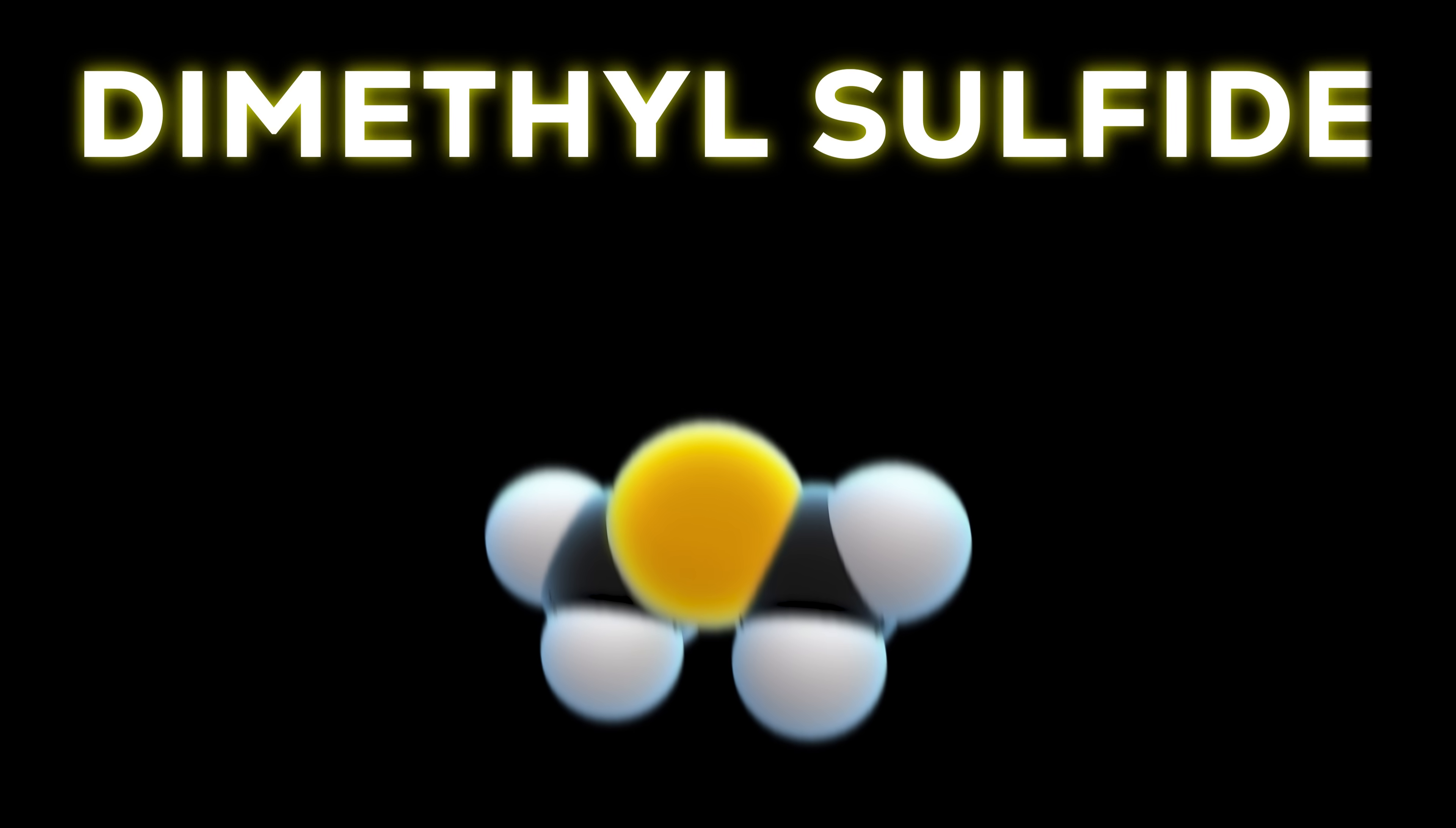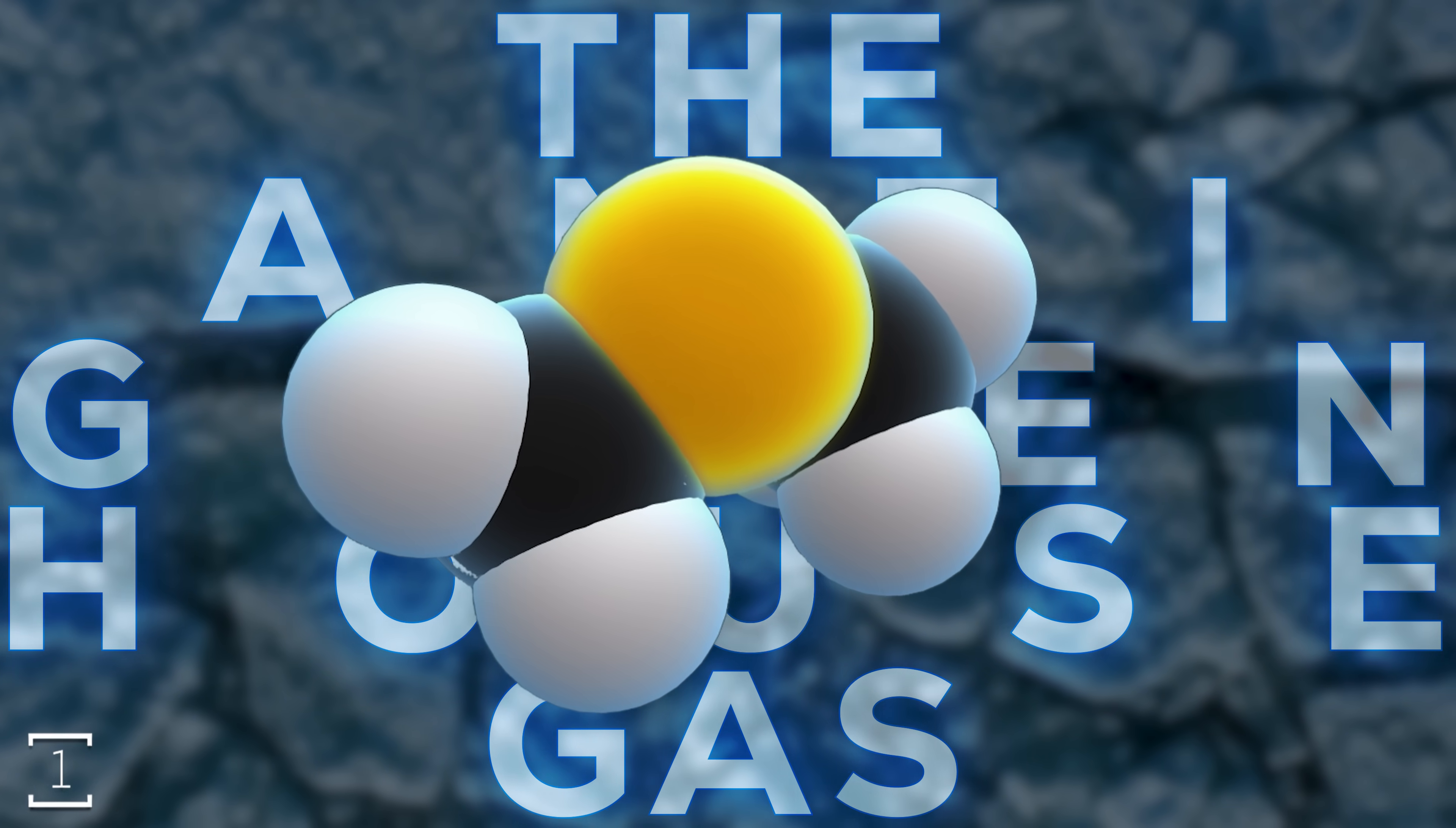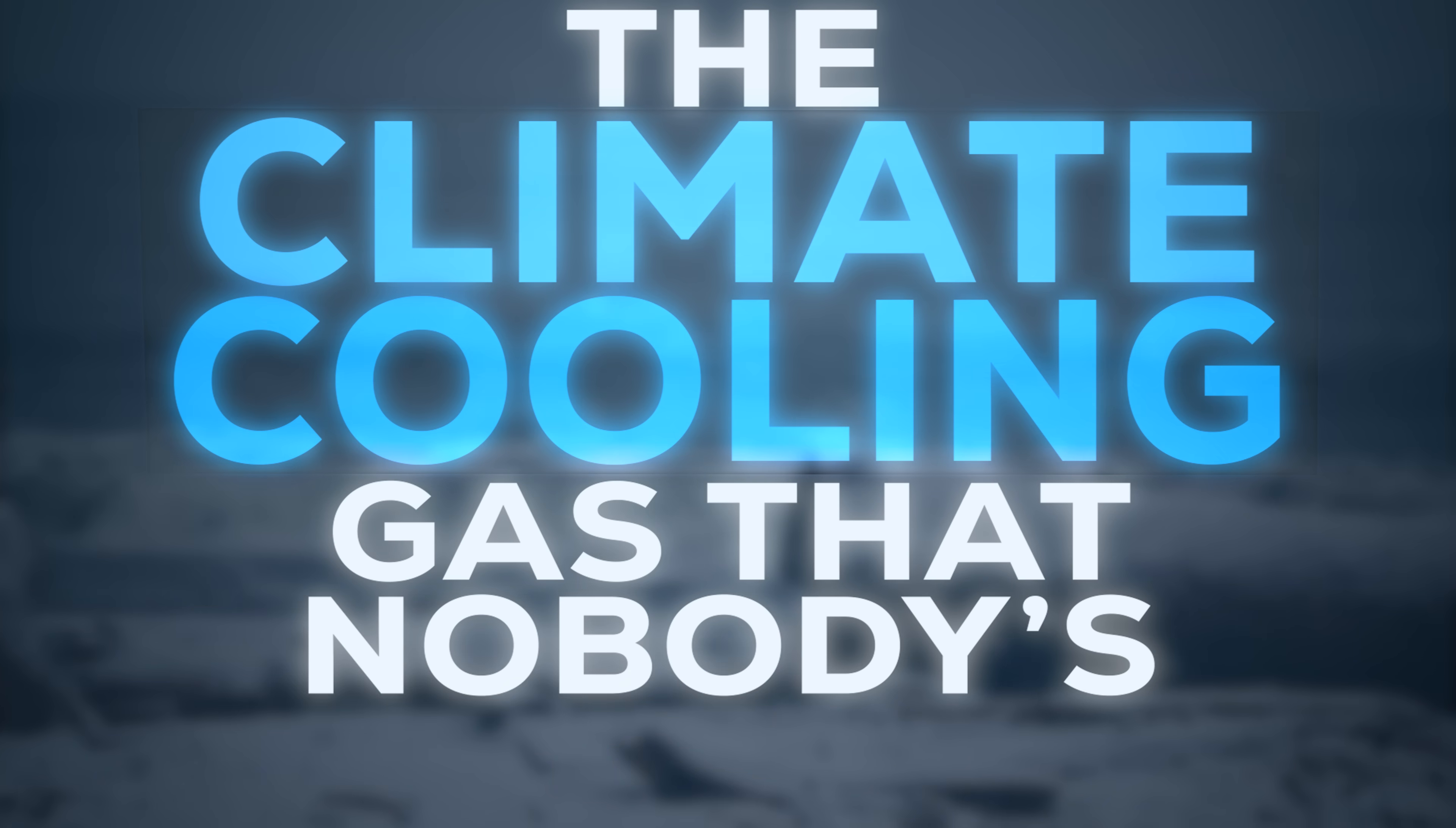This is dimethyl sulfide, or DMS, a unique and notably stinky molecule that has been dubbed by some as the anti-greenhouse gas. But how exactly does it cool the planet? And could it actually prevent some of the worst case scenarios of climate change? This is the climate cooling gas that nobody's talking about.